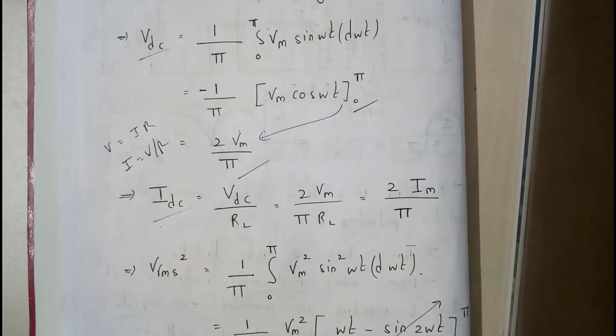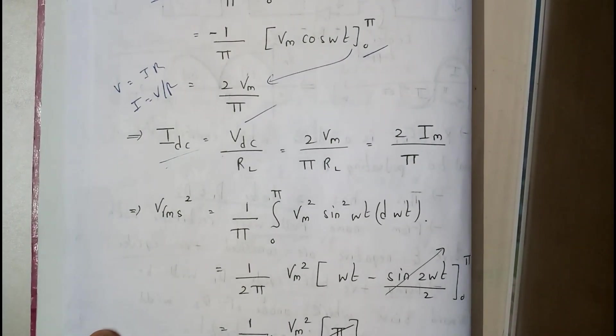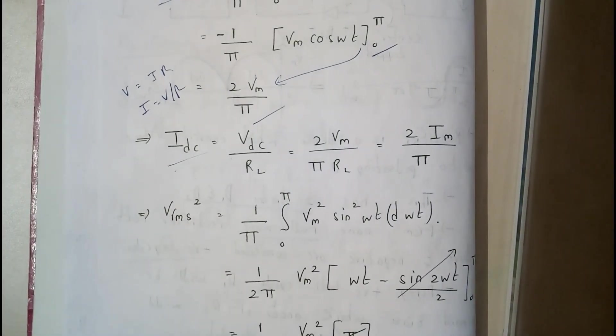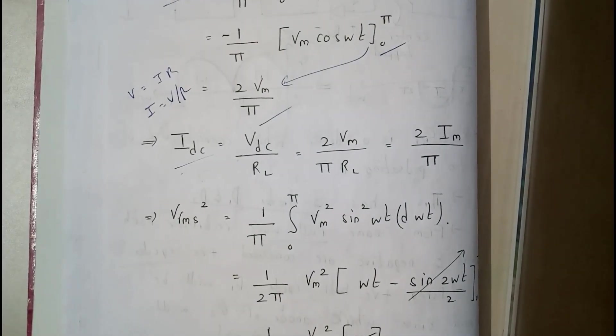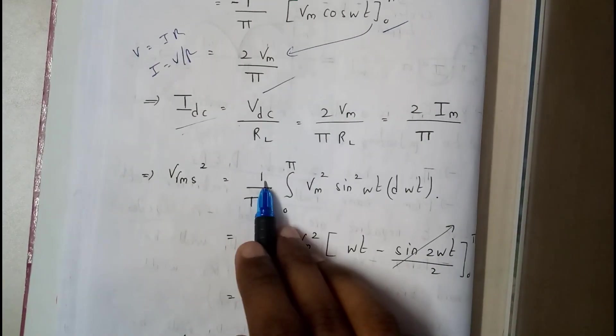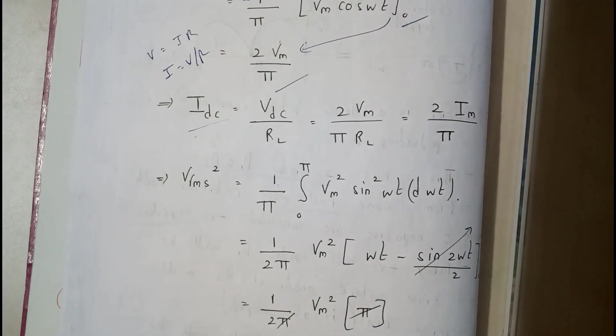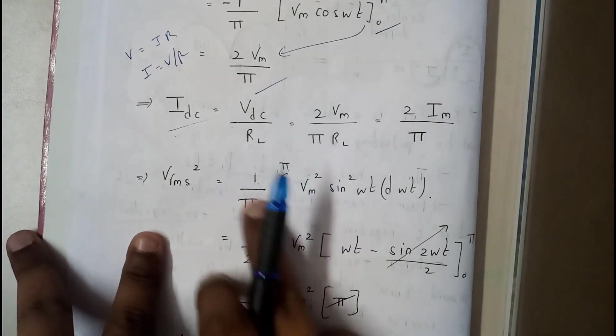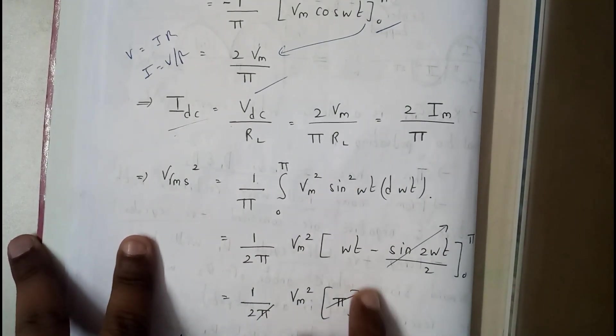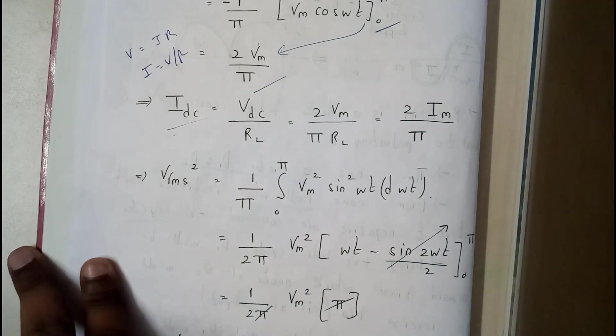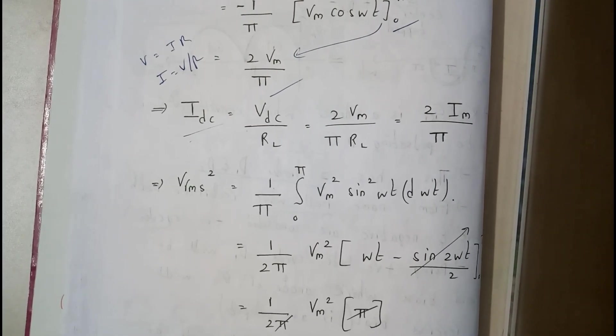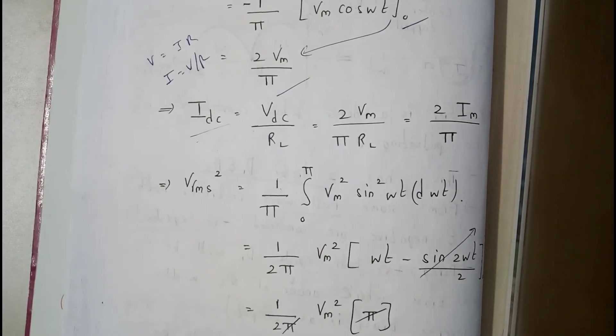Further moving on, we need V_rms also. Basically, V_rms is nothing but root mean square. So V_rms squared equals 1 by π integral 0 to π of the square of the above term, which is V_m squared sin squared ωt dt. We'll be taking V_m squared common. We can write sin squared ωt in terms of 1 minus cos 2ωt. Differentiation of cos is nothing but sine, so that's what we have just done here.